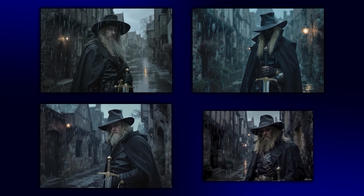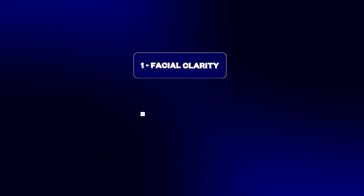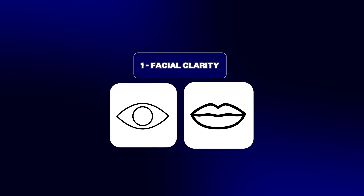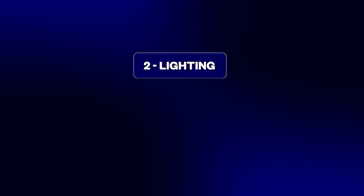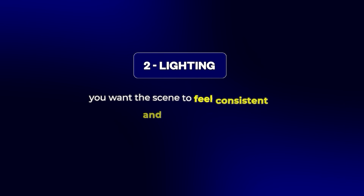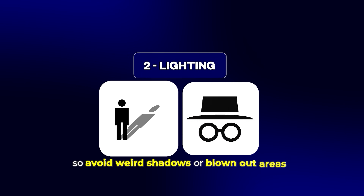Flux will now give you four different versions. This is where you pick carefully. Here's what I look for: first, facial clarity — the eyes and mouth especially. If those aren't clear, don't use it. Second, lighting — you want the scene to feel consistent and cinematic, so avoid weird shadows or blown-out areas.